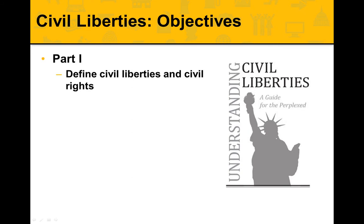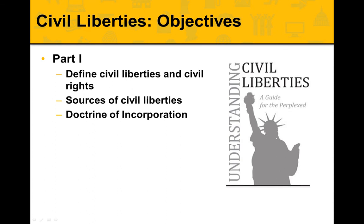Part one is going to be defining what we mean by civil liberties and civil rights, and then talking about where we get these civil liberties and where we find them in American politics. Then we'll talk about the doctrine of incorporation, which you'll come to know and at least understand. This is basically applying the Bill of Rights to the states.